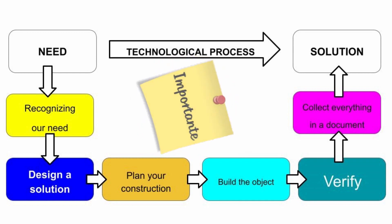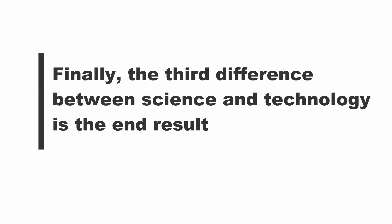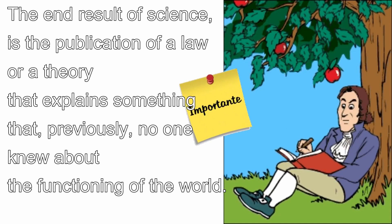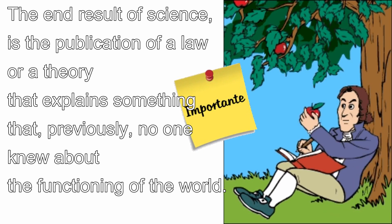And finally, the third difference between science and technology is the end result. The end result of science — what a scientist tries to achieve — is the publication of a law or a theory in a scientific article.